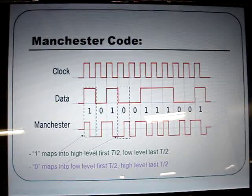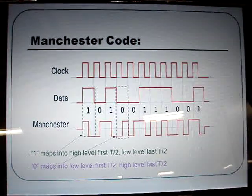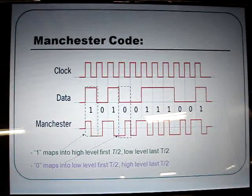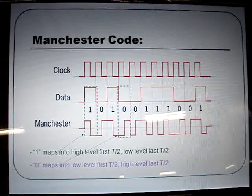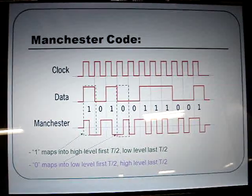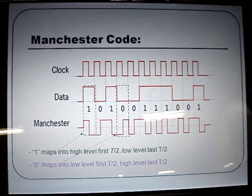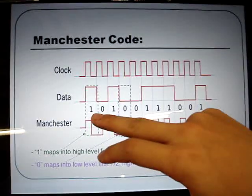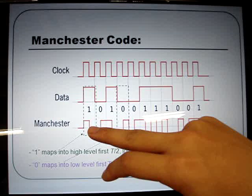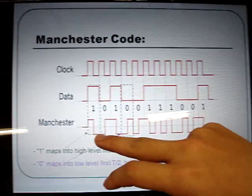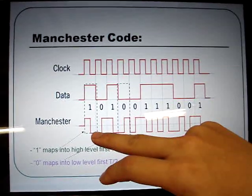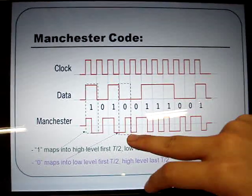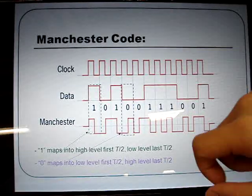What is Manchester code? Manchester code is a form of data communication line code in which each bit of data is signified by at least one voltage level transition. For example, data bit 1 is represented by a falling edge in Manchester coding, and data bit 0 is represented by a rising edge in Manchester coding.